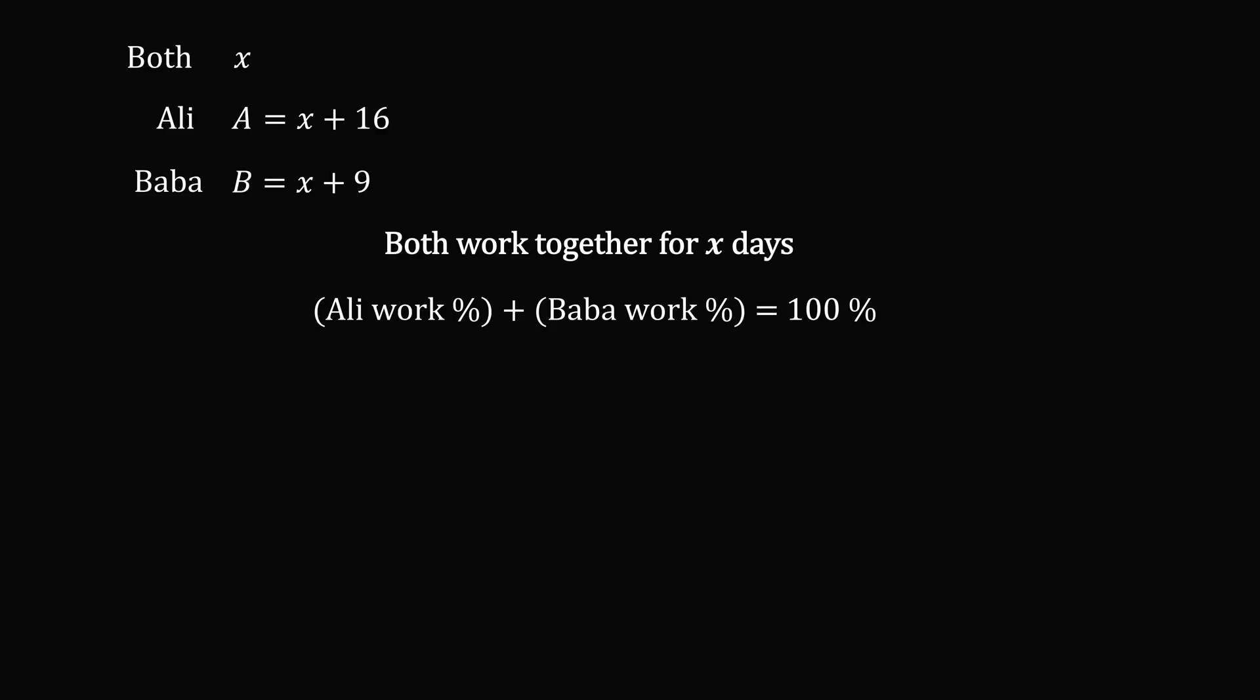Now, what's the fraction of the job done by Ali? That will be x over a. Similarly, Baba's work percentage in x days will be x over b. The sum of these is equal to 100%, which equals one.